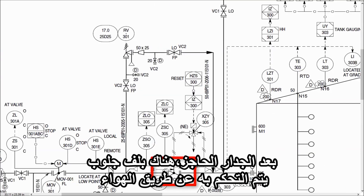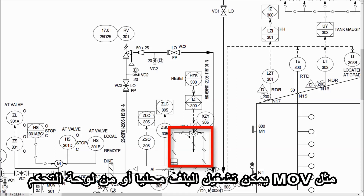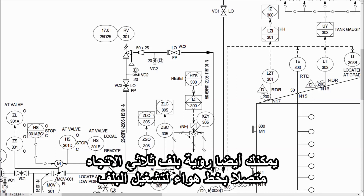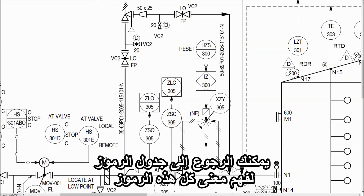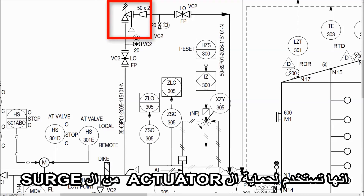After the dike valve, there is a pneumatically controlled globe valve. You can see the pneumatic line symbol. Like MOV, the pneumatic valve also has various switches to operate the valve locally and from the control panel. You can also see the three-way valve connected to the pneumatic line to operate the actuator. You can refer to the abbreviation table to understand the meaning of all these instrument bubbles. You can see that there is a relief valve in bypass, which is used to protect the actuator from surge.